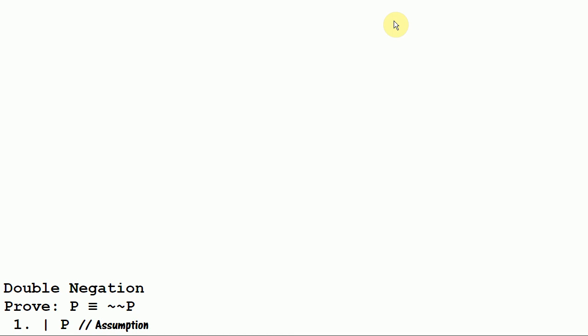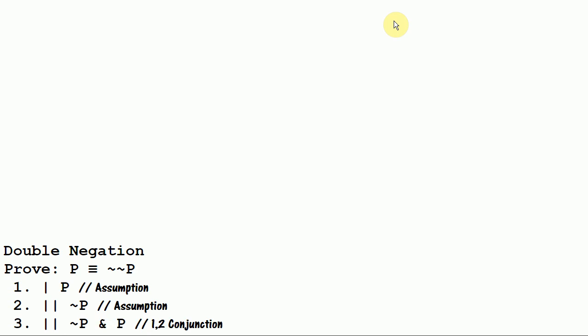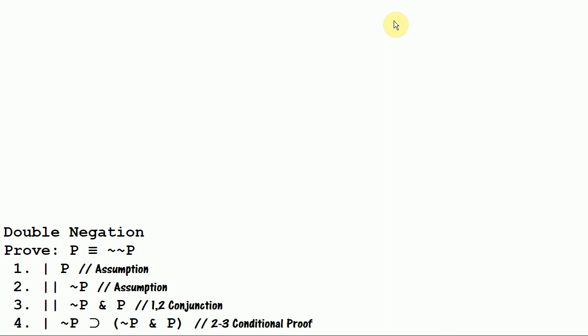Let me demonstrate how that can be done. We want to prove that P is equivalent to not not P. We're going to do it by trying to prove if P then not not P, and by trying to prove if not not P then P. So we start out by assuming P. Since we cannot use the rule of double negation in a proof of the rule, we can't just go to line two and say not not P. So what are we going to do? Well, I'm going to assume not P — that way I get a P that has a tilde in it. But where can I go with this? I can conjoin P and not P, and I get not P and P. And that's a contradiction. I know a contradiction is false. And now I'm going to conclude this conditional proof and I get if not P, then not P and P.